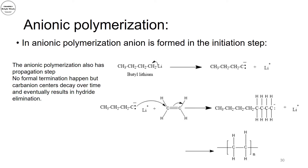Now moving to anionic polymerization. It is similar to cationic or free radical polymerization — it starts with an initiation step. In the initiation step, butyllithium forms the carbon anion. This anion can attack one of the carbons of a double bond; the double bond breaks and a bond forms between the carbon anion and one of the carbons of the double bond, giving a growing polymer chain with an anionic end.